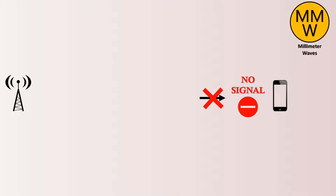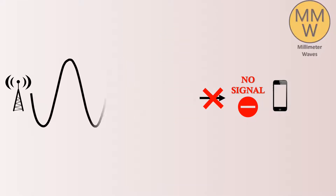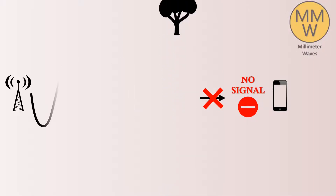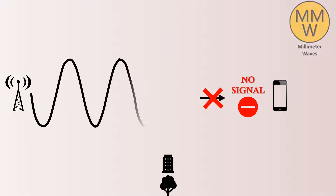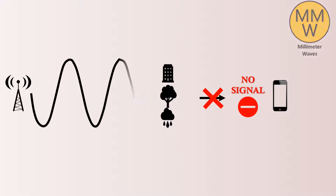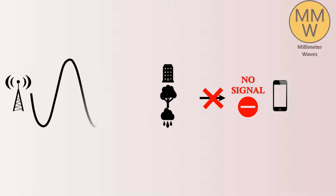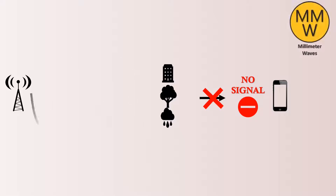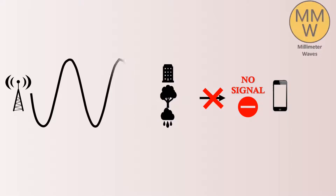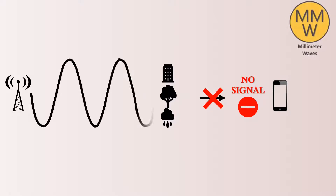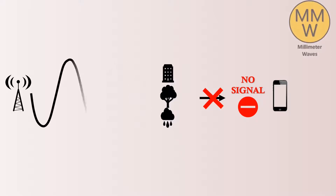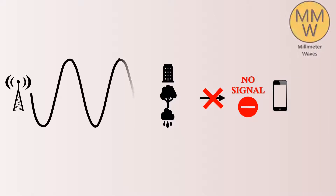So far, millimeter waves were used for satellite and radar operations. Now, some cellular providers have begun to use them to exchange data between two stationary points. But using millimeter waves to connect mobile users with a nearby base station is entirely a new approach. However, these waves cannot easily travel through buildings or obstacles, and are easily absorbed by trees, plants and rain.